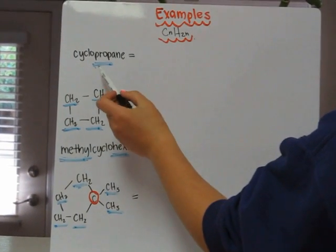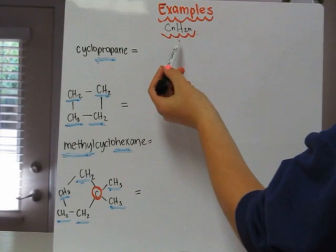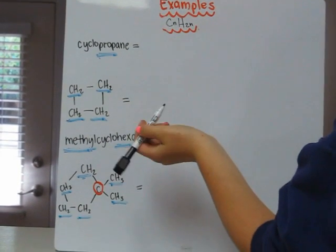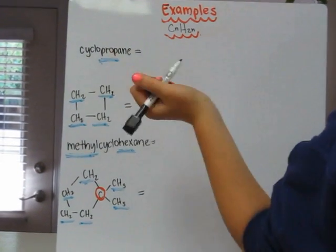So our first example is cyclopropane. We know that for cyclopropane, the general formula is CnH2n, and Prope tells us that we have three carbons.